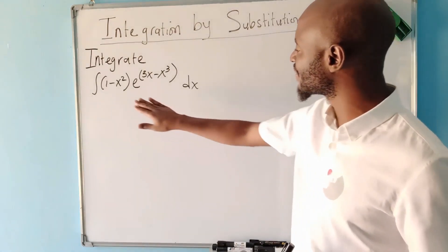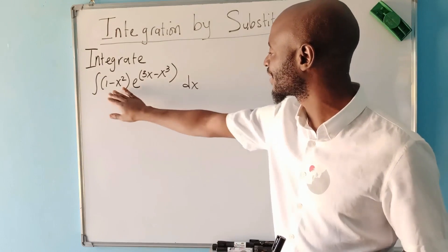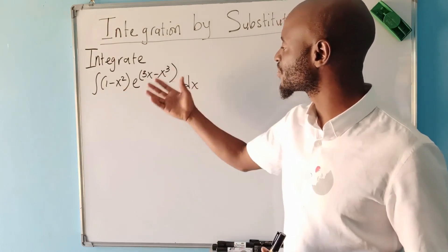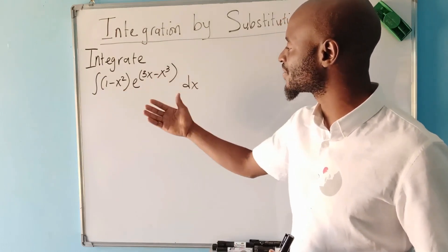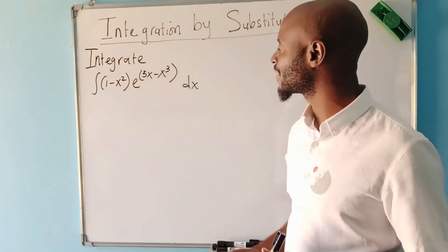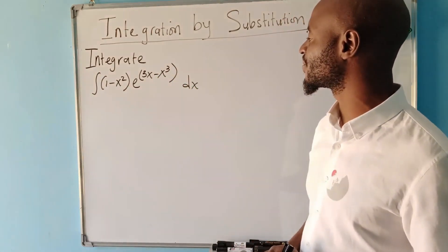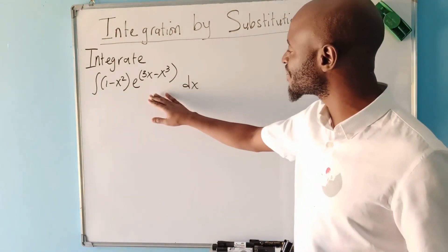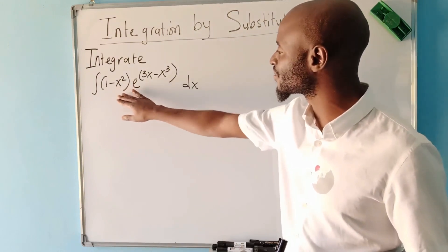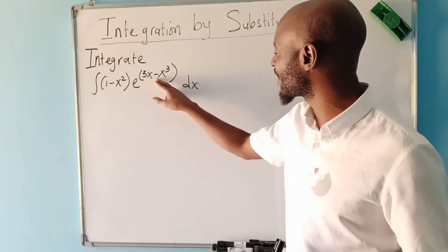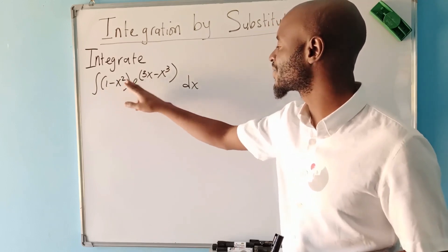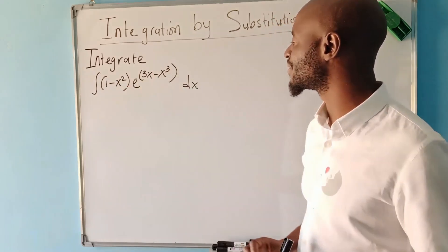Normally you'll be given functions that will be multiplying or functions that will be dividing. You have to choose one and make it u, then change everything so that we have integration in u. The struggle will be for you to identify which one you can make u. You can see we have a function here and another function there, so one of them should be u.